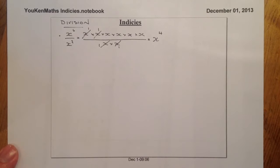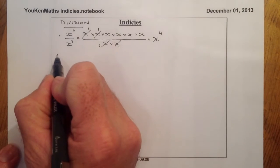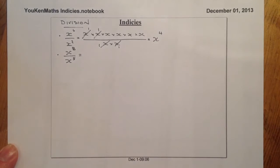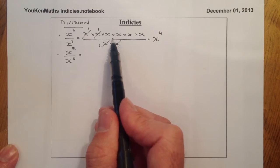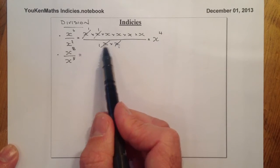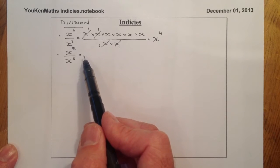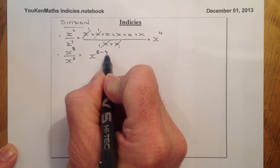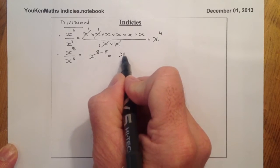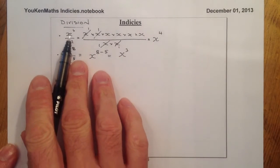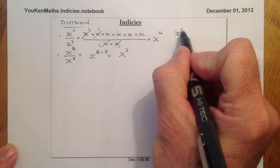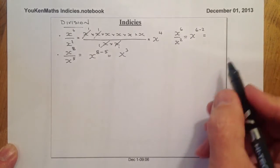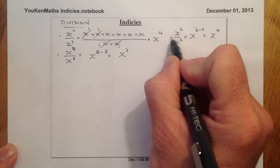Let's look at another example: x to the power of 8, all divided by x to the power of 5. This time I'm going to use one of the rules of indices rather than the longhand method, which looks a bit clumsy. I'm going to say x to the power of 8 subtract 5, which gives me x to the power of 3. Similarly, looking back at the first question — x⁶ divided by x² — I could have just subtracted the indices to get x to the power of 4, the same answer.